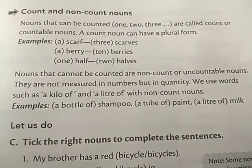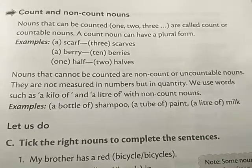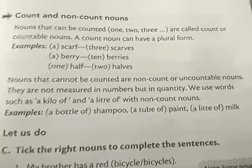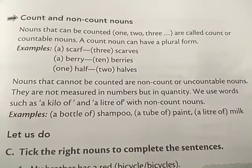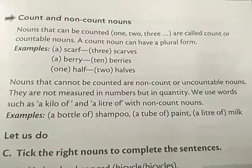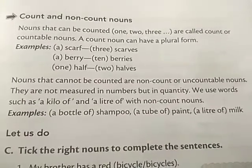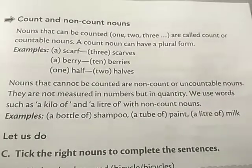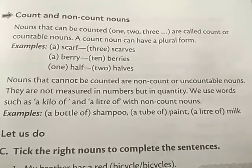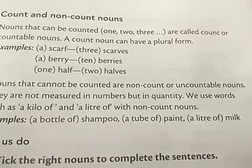Now, non-countable nouns. Nouns that cannot be counted are called non-countable nouns. They are not measured in numbers but in quantity. We use words such as kilogram, liters, and meters. If you have learned the measurement chapter, you will have already come across these measurements. For example, when you go to a shopkeeper and say you want a bottle of shampoo, that is referred to in liters.